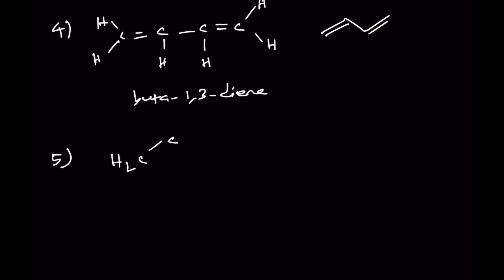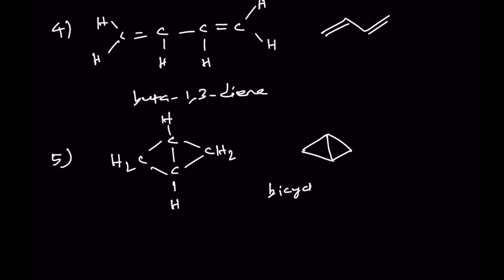Number five: let us write down the fused bicyclic ring — something many people forget. In bond line notation it looks like this. This is a fused bicyclic compound. The IUPAC name is bicyclo[1.1.0]butane, because on the bridge heads there are no additional carbons, giving zero.